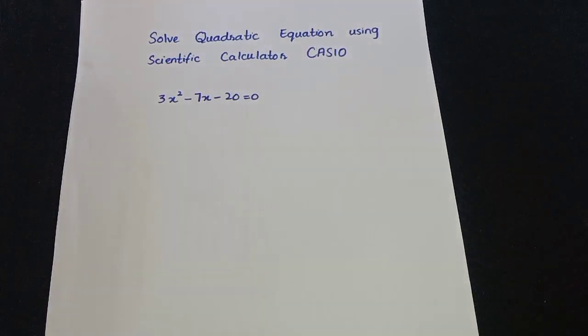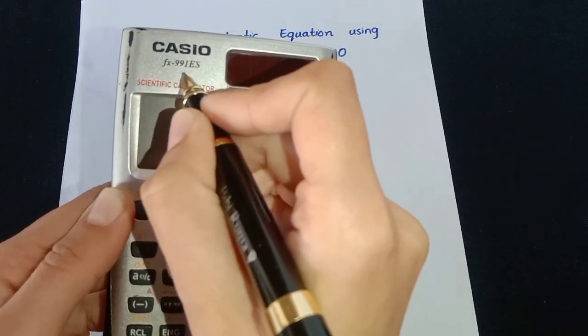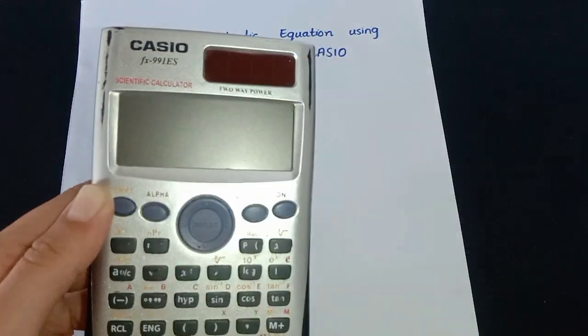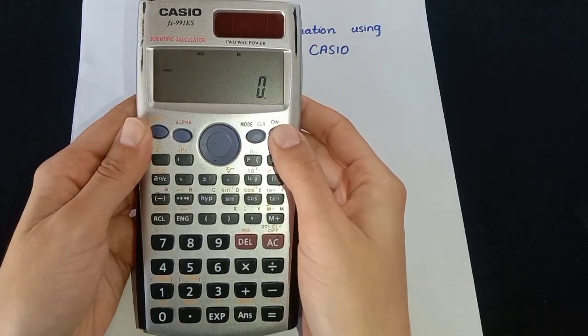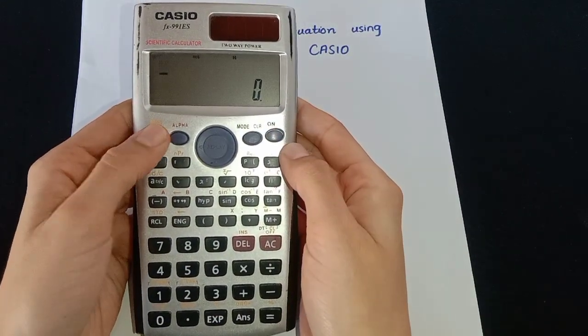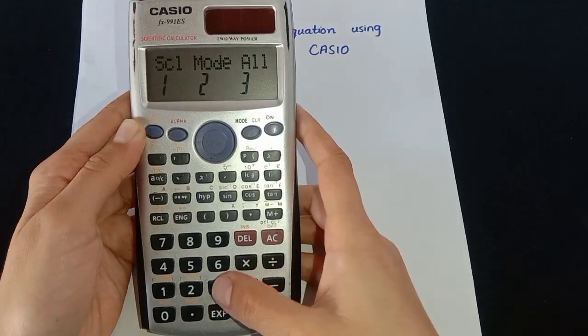Assalamualaikum everyone. In this video I will show you how to solve quadratic equations using the scientific calculator Casio FX-991ES. First, turn on the calculator, press the shift key and then clear mode, then select 3 to